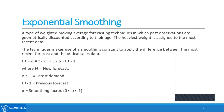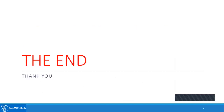Exponential smoothing method is a type of weighted moving average forecasting technique in which past observations are geometrically discounted according to their age. The heaviest weight is assigned to the most recent data. The technique makes use of a smoothing constant to apply the difference between the most recent forecast and actual sales data.